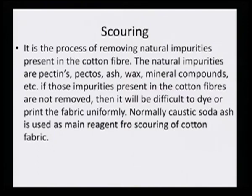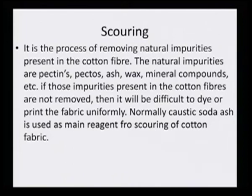Then comes the scouring step. It is the process of removing natural impurities present on the cotton fiber as well as on synthetic fibers. The natural impurities are pectin, pectos, ash, wax, mineral components, and oil stains. If those impurities are not removed from the fiber, it will be difficult to dye or print the fabric uniformly. Normally, caustic soda or soda ash is used as a main reagent for scouring of cotton fabric, but scouring can also be done with mild detergents, as in the case of silk and wool.